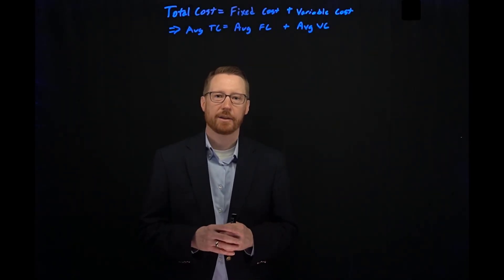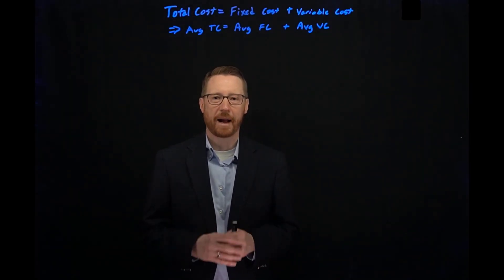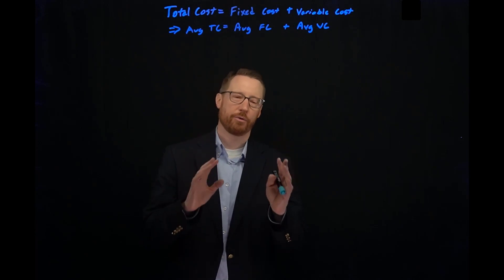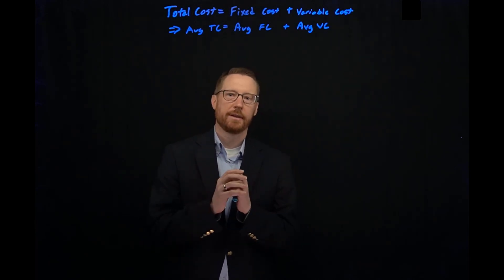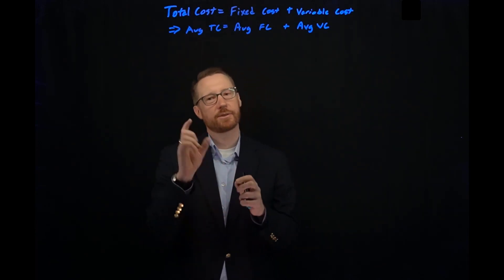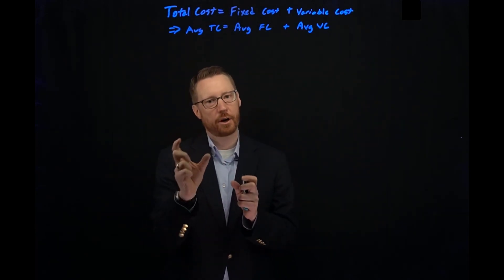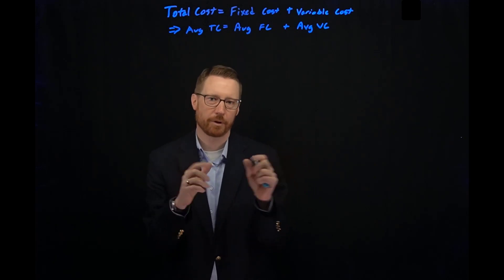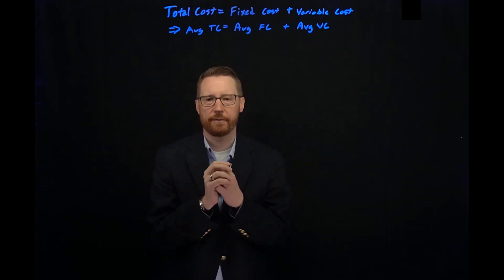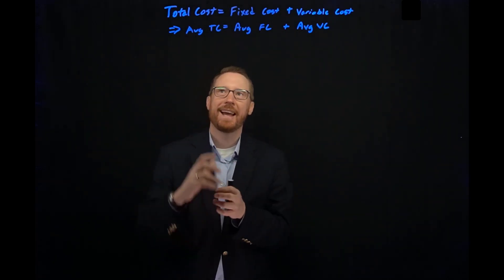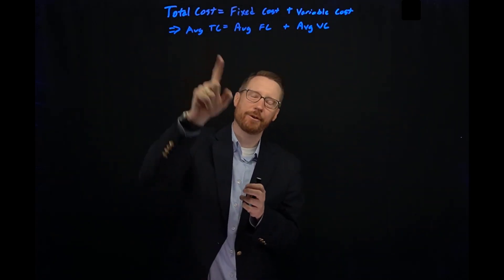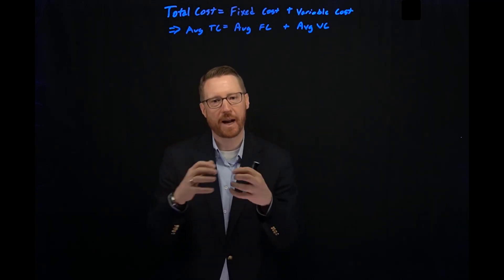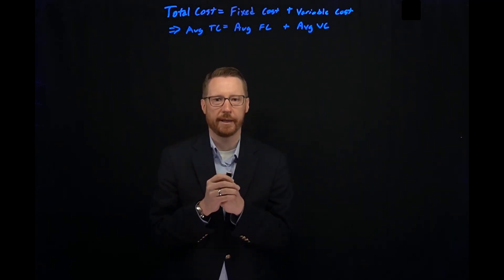Welcome back. Let's talk about average total cost. Total cost is the sum of fixed cost plus variable cost — it's just the total cost of a firm. And average total cost is that total cost divided by quantity.